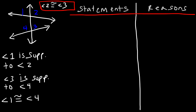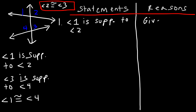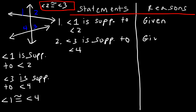The first thing we should do is write the statements we're given. Number one: angle one is supplementary to angle two — that's given. Number two: angle three is supplementary to angle four — that's given as well. And number three: angle one is congruent to angle four — that's given.